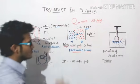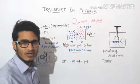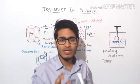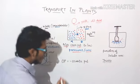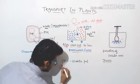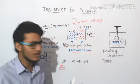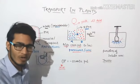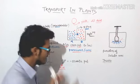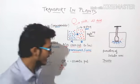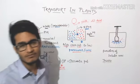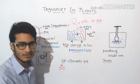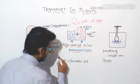Osmotic pressure and osmotic potential have the same magnitude but opposite signs. Osmotic pressure is positive because we are applying pressure. Osmotic potential has the same magnitude as osmotic pressure but a negative sign — so osmotic potential is negative. If a question gives you the osmotic potential, you can easily calculate the osmotic pressure using this relationship.